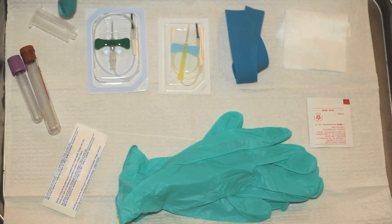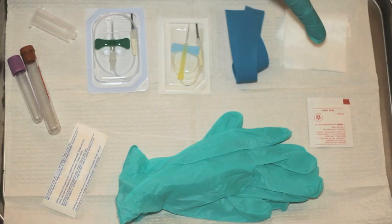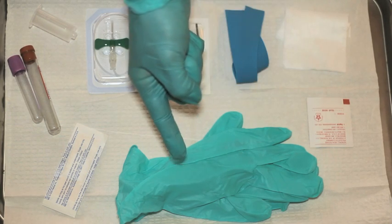This includes vacutainer tubes with an adapter, a 21 or 23 gauge butterfly needle, a tourniquet, gauze, alcohol swabs, gloves, and a band-aid.